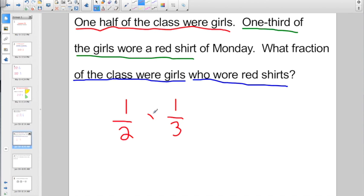So pretty basic now. 1 times 1, that's going to give me 1. Denominator times denominator, 2 times 3, that's going to give me 6. So what fraction of the class were girls who wore red shirts? 1 sixth of the class. Because 1 half of the class were girls, 1 third of the girls wore a red shirt. So I have 1 sixth.